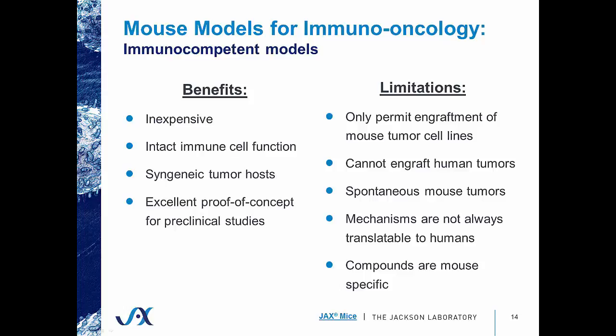Some limitations for using immunocompetent models are that they only permit the engraftment of mouse tumor cell lines and cannot engraft human tumors. Also, some models will spontaneously develop mouse tumors, and mechanisms observed in immunocompetent models are not always translatable to humans. Finally, because compounds have to be developed to specifically target mouse proteins, those compounds are mouse-specific, and you would have to develop human-specific targets once you demonstrate efficacy — essentially doubling your work.